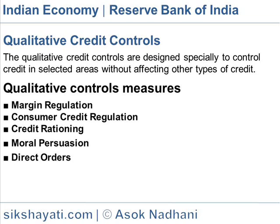Consumer Credit Regulation involves regulations to restrict loans for installment purchases of specified commodities like motor cars. Selective controls of loans may be exercised. During inflationary conditions, the central bank may direct commercial banks not to extend consumer loans and advances for consumption.